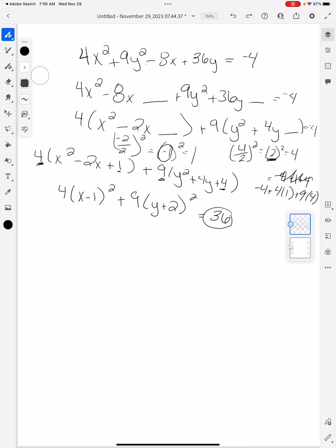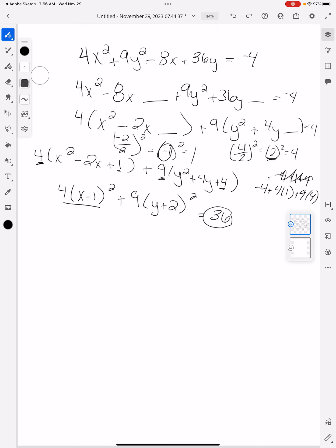So you're going to divide everybody by that number. So I'm going to divide this by 36. I'm going to divide this by 36. And I'm going to divide this by 36. Which is going to leave me with x minus 1 squared. The 4 and the 36 are going to cancel. And I'm going to have a 9 because 36 divided by 4 is 9.